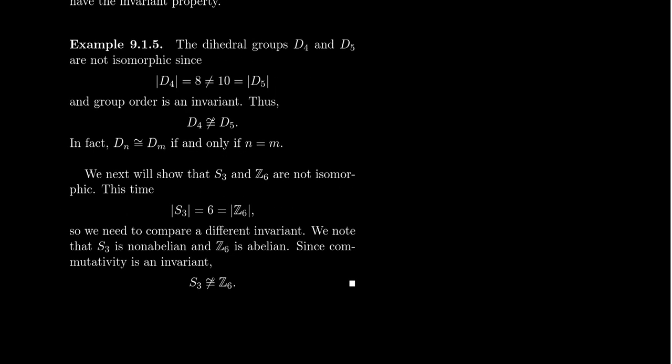Order is a very nice invariant: if two groups have different orders, they can't be isomorphic. But there are groups with the same order that can still be non-isomorphic. Take S3, the symmetric group on three letters, and Z6, the cyclic group of order six. S3 has order 3! = 6, so both groups have order six. That tells us nothing about isomorphism — they could be isomorphic or not. We have to look for a different invariant to show they're not isomorphic.